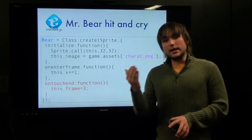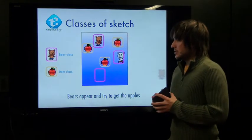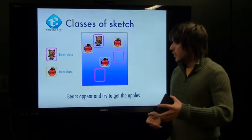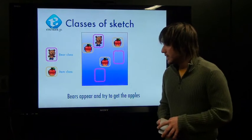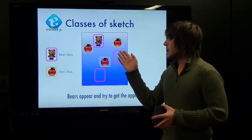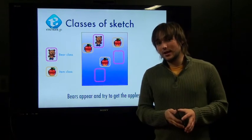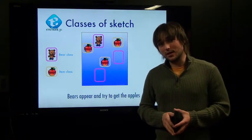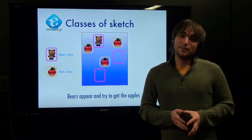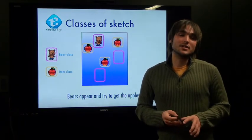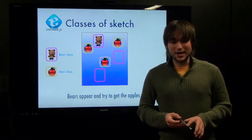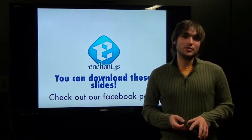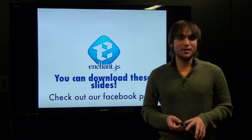So let's go back to our sketch with all of these things. We have bears — they appear and they try to get the apples. You've already started saving yourself some time because you've created the bear class, and the next step would most likely be to create an item class as a sprite, bringing in the image of an apple and saving yourself some time. That's how you use classes you've created to save yourself time when programming games with Enchant.js. You can download all of these slides from our Facebook page — just search Enchant.js on Facebook. Thanks for watching.